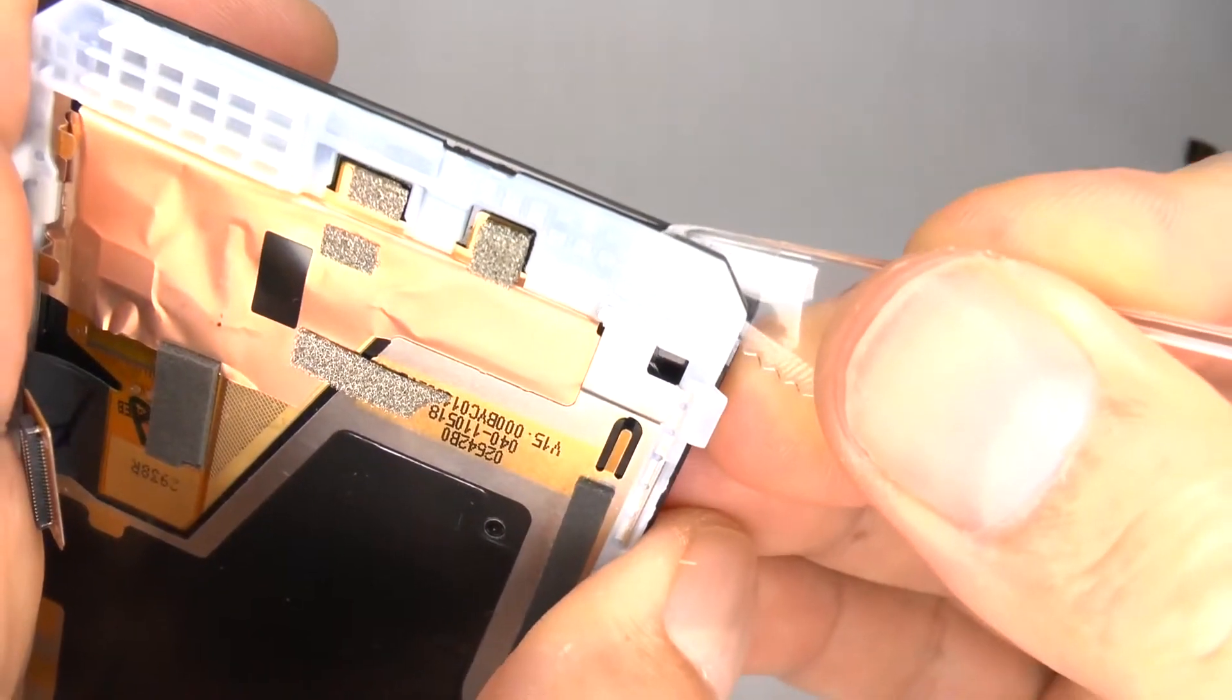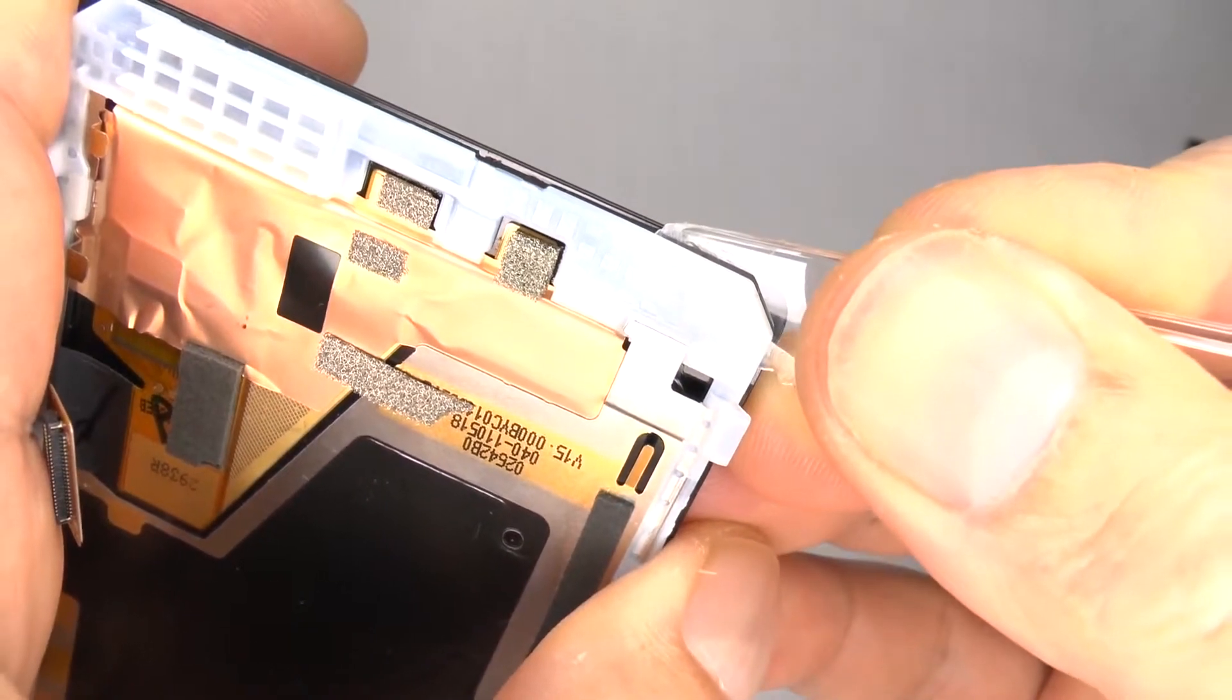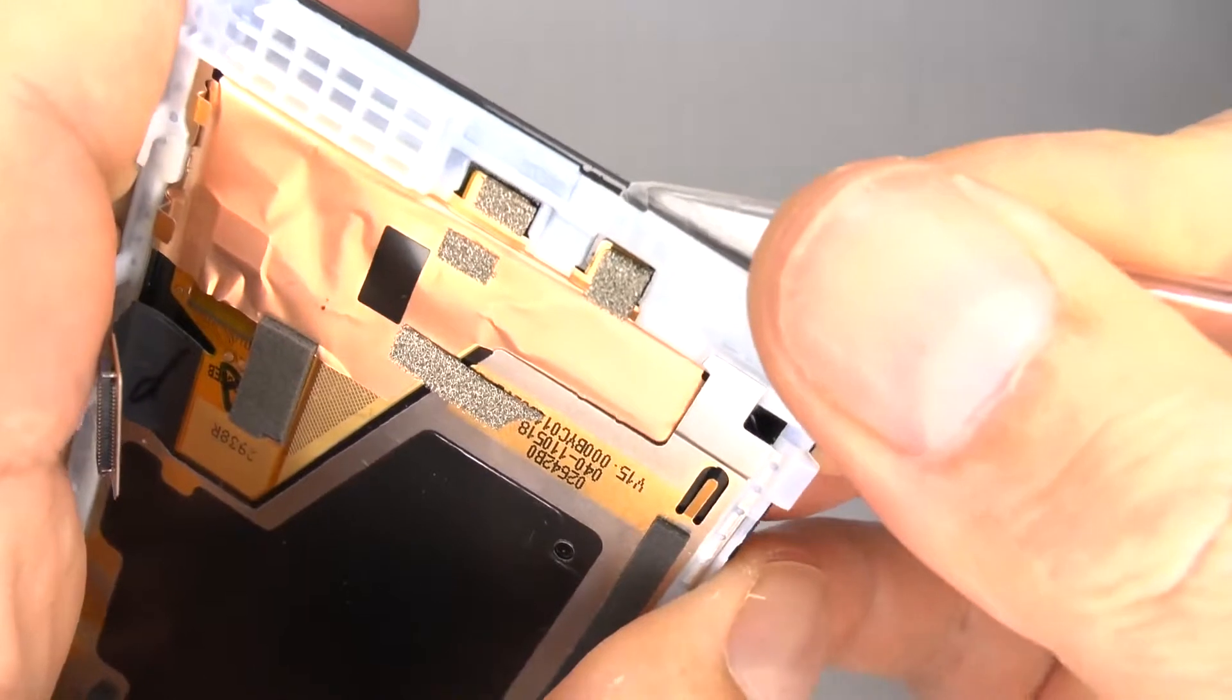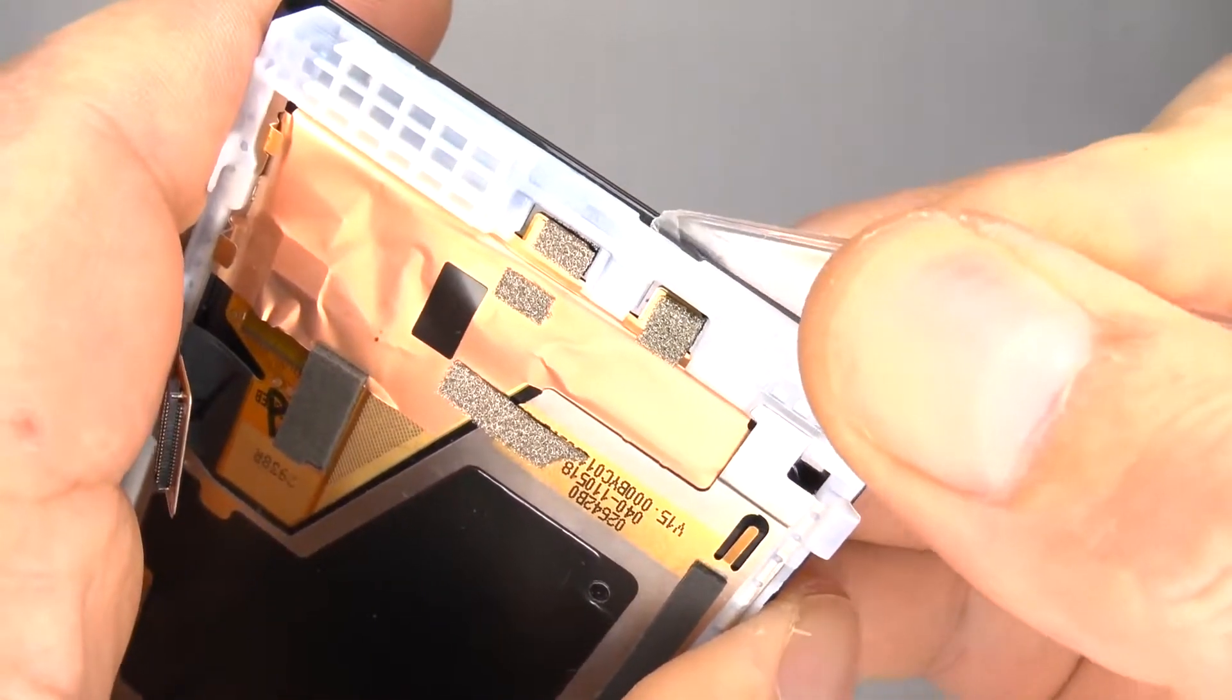Keep separating the frame from the glass. You could use some heat to help soften the adhesive. I'm doing this cold.